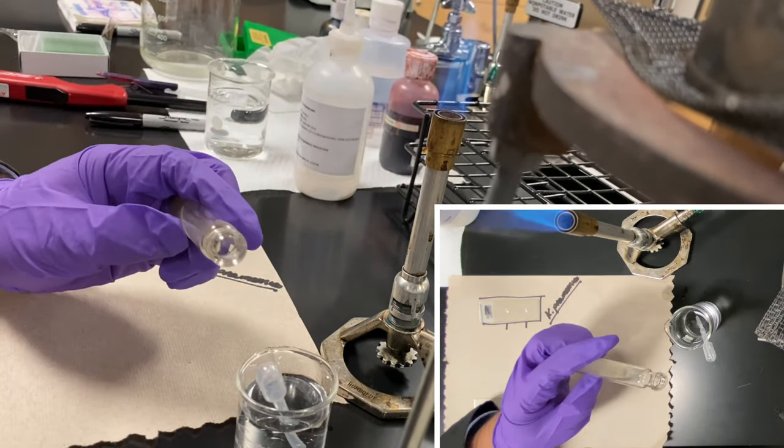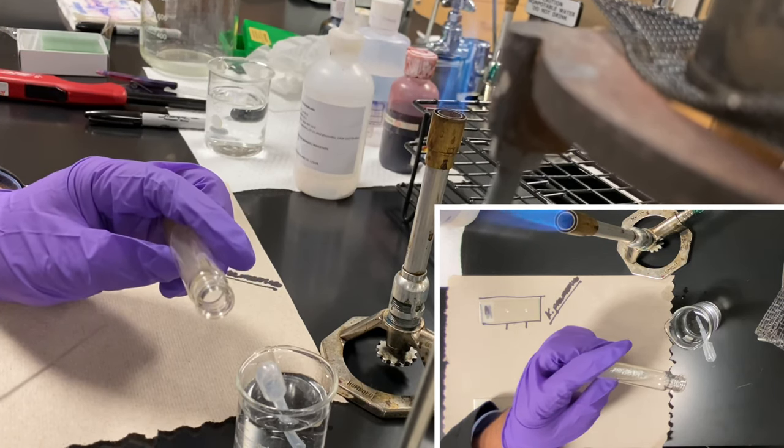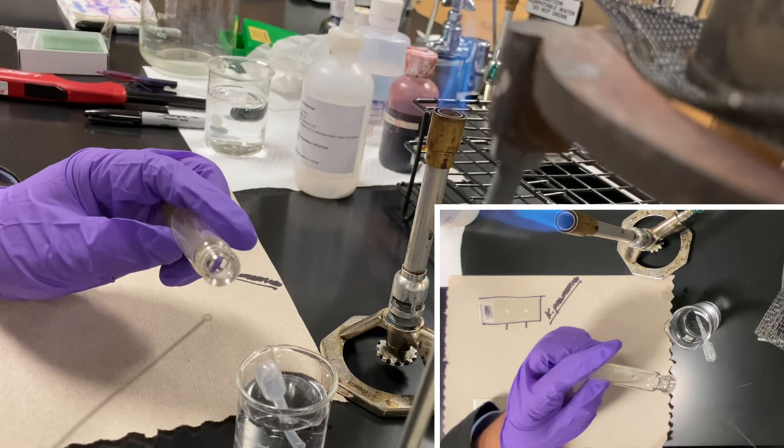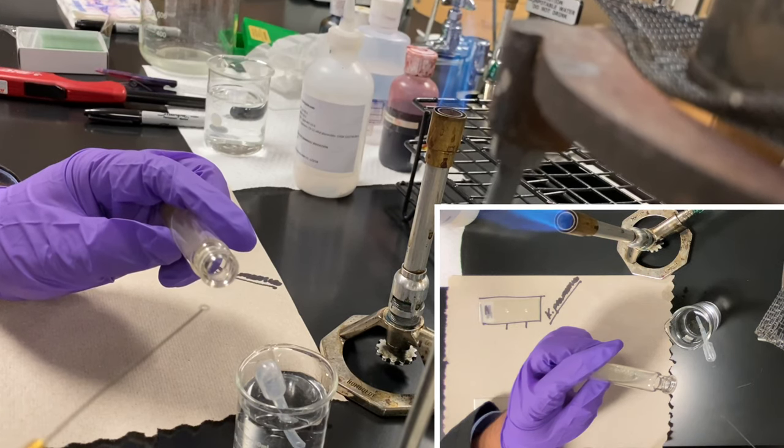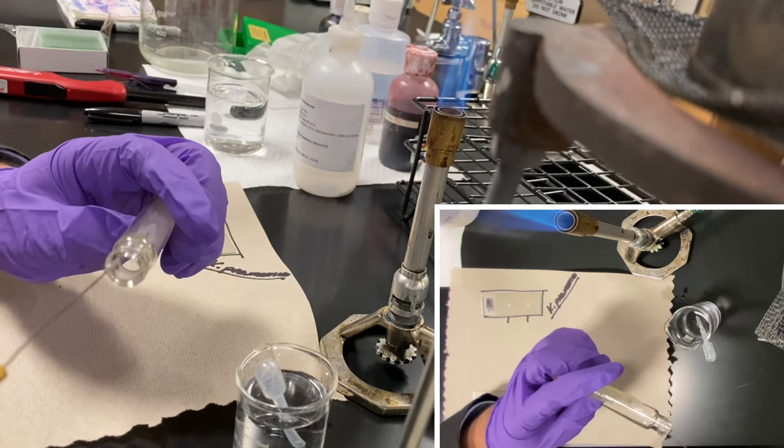After about 15 seconds, I'm going to pick up a tiny little amount. I want to make sure I wait 15 seconds or more to ensure that my loop is sterile and cool. If I don't, it will kill the organisms when it touches in there. So 15 seconds have passed.